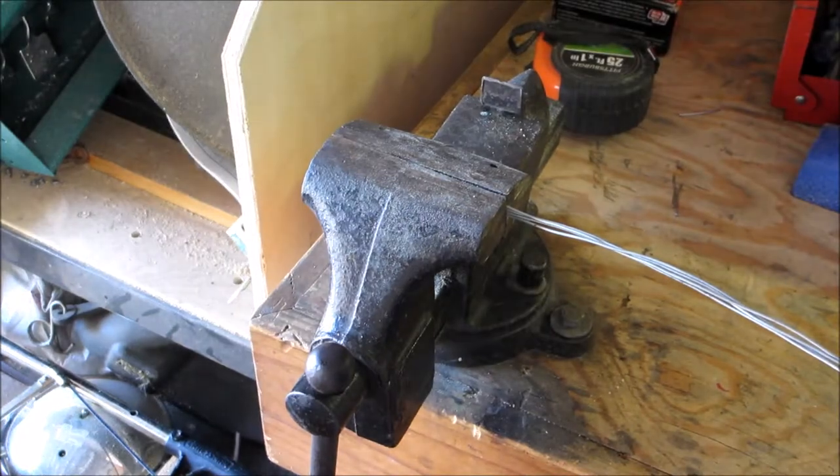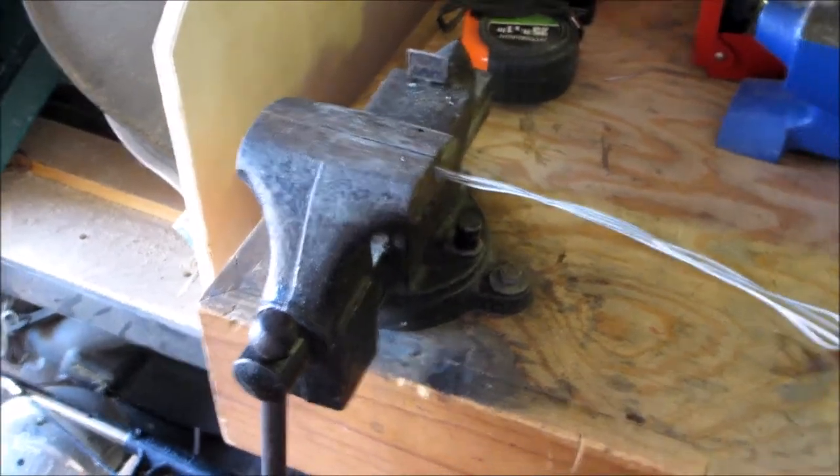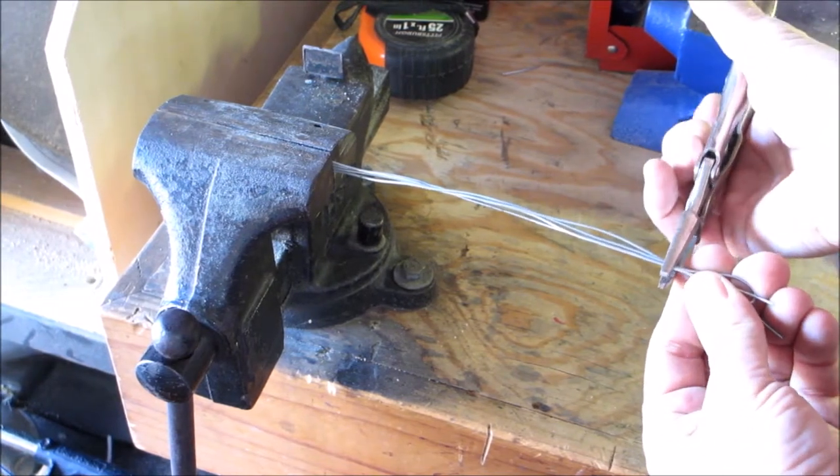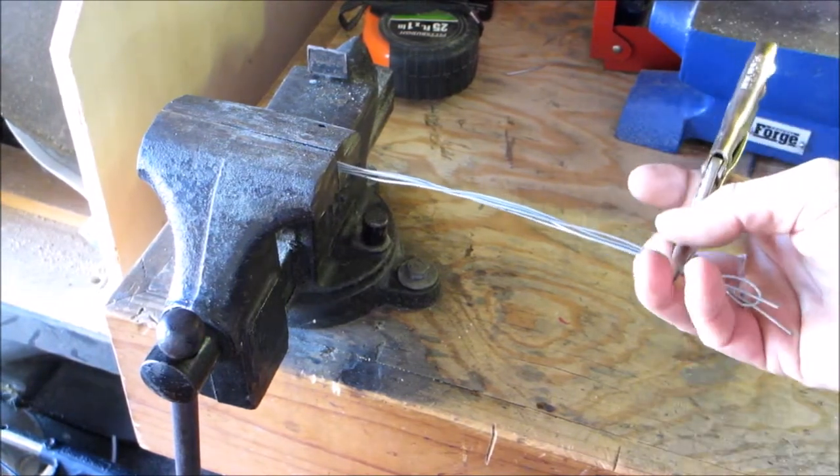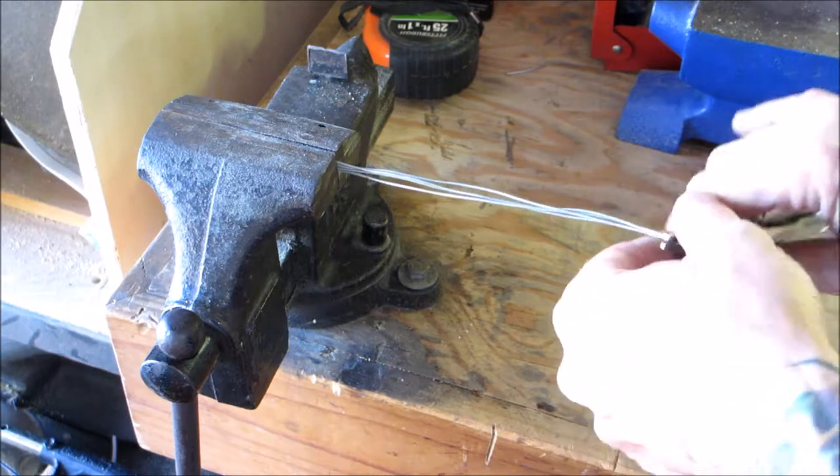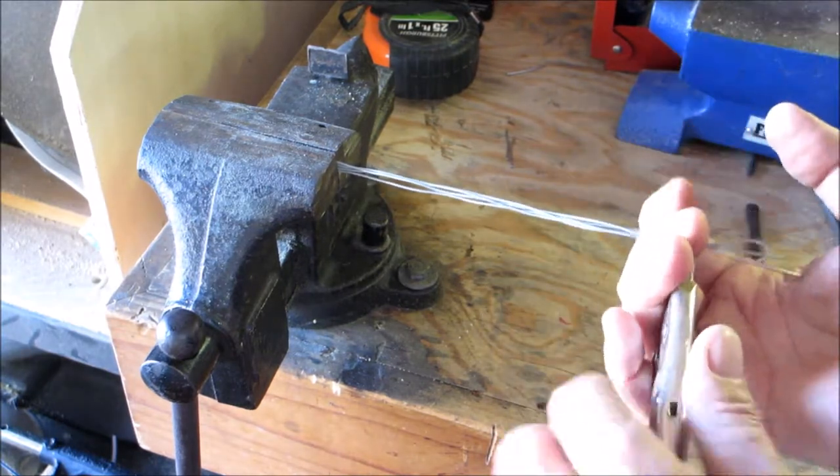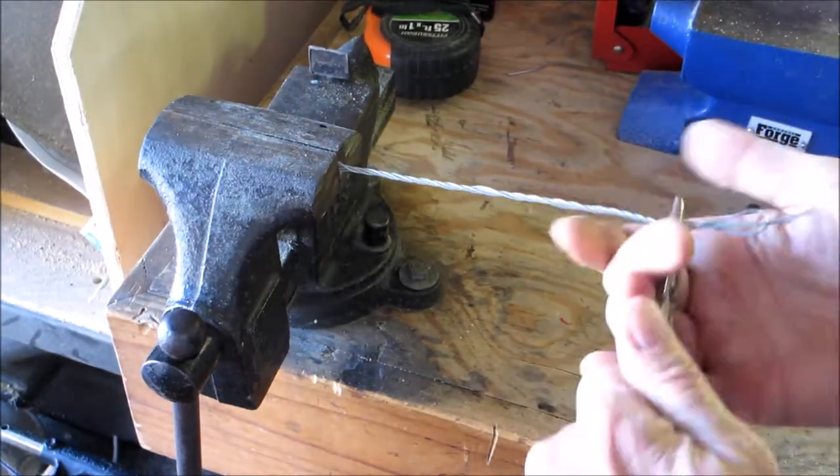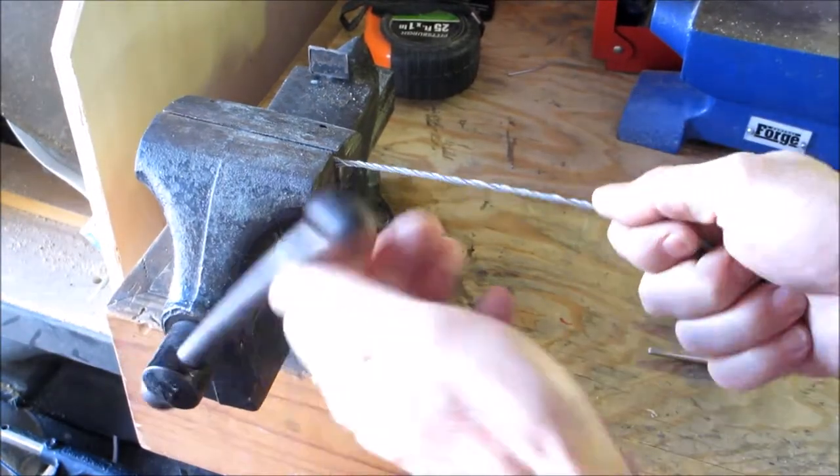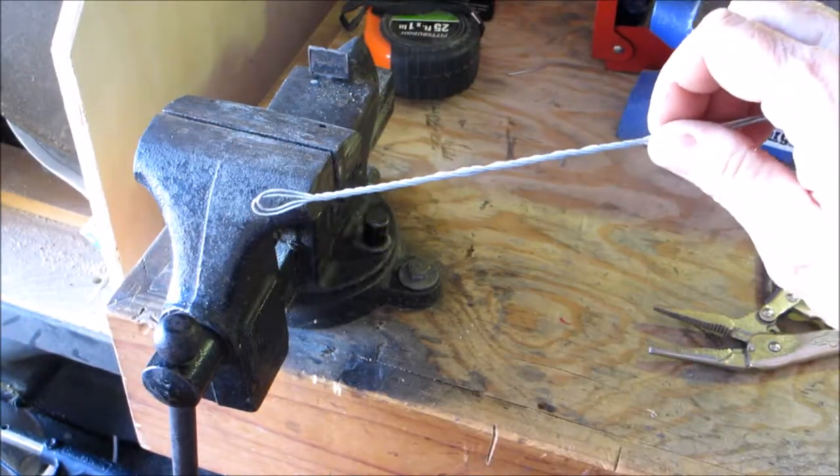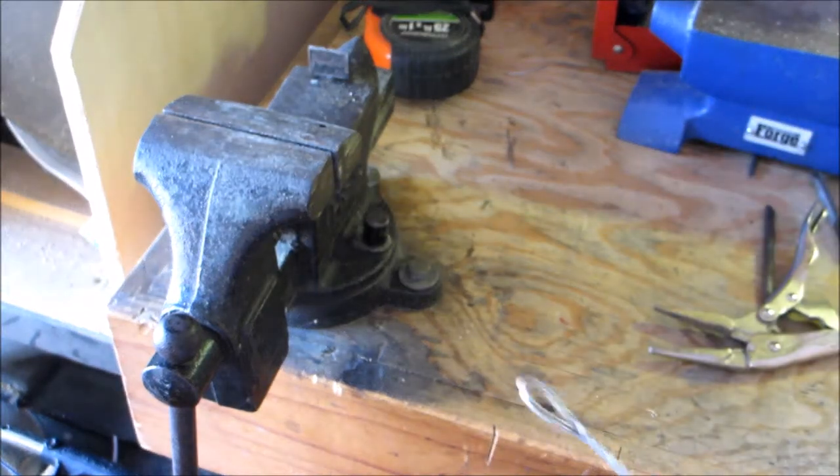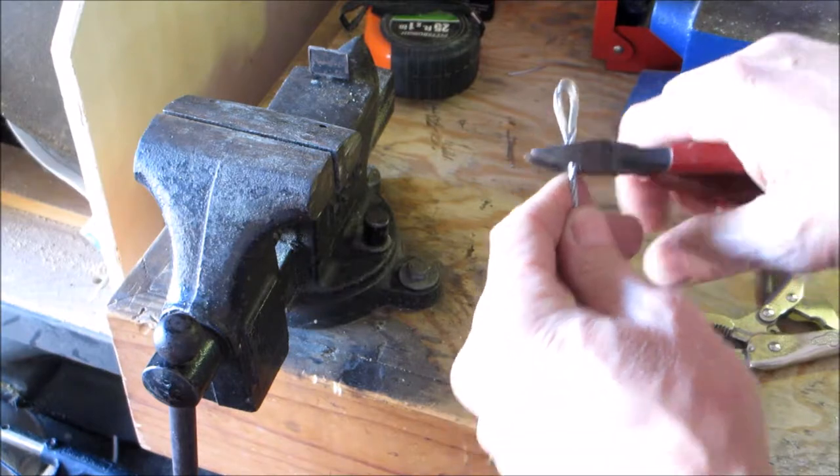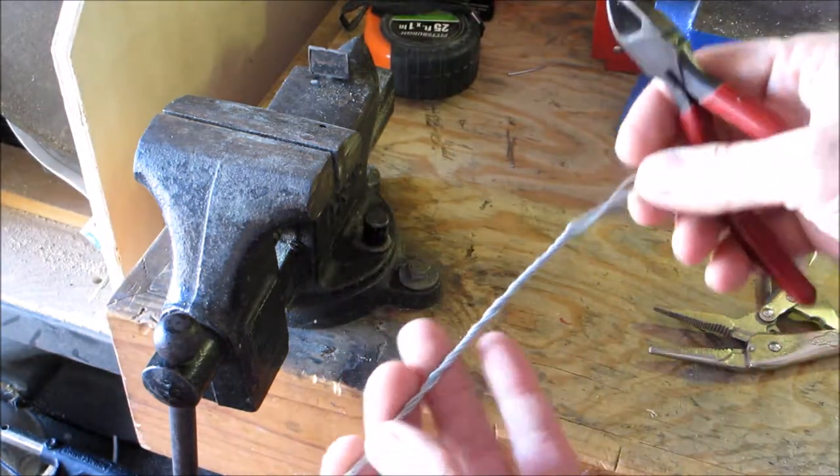Get the one end, place it in your vice, grab the other end with your vice grip, and just start twisting. When you're twisting, hold it out this way. There you go. Then you would just get yourself some cutters and cut the ends off.